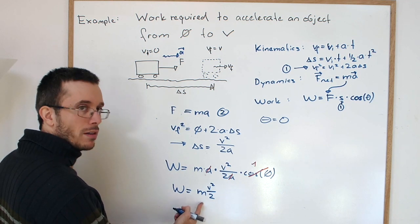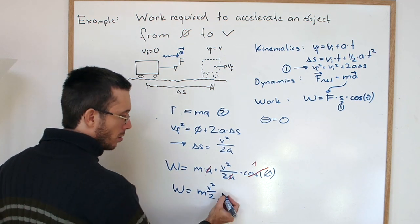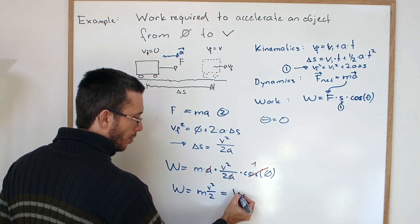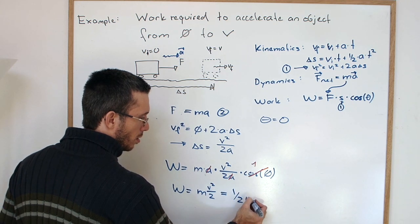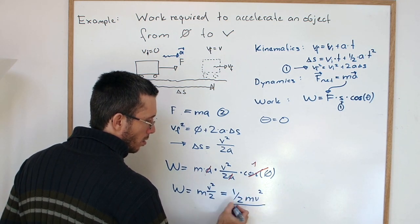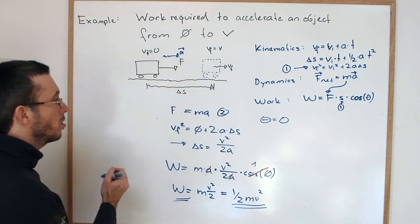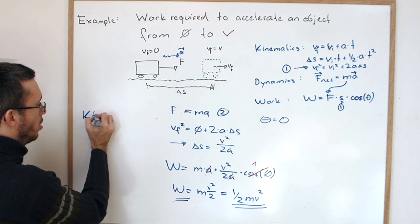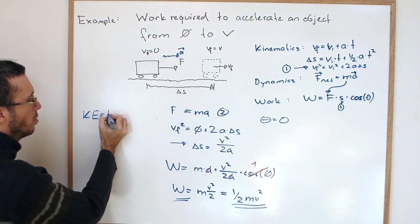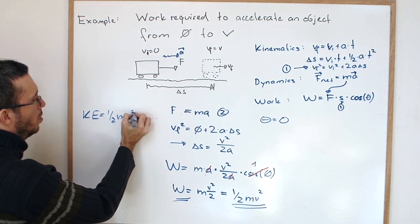Now maybe that doesn't look familiar yet. But what if I rewrite it like this? Have you seen this before? Yes, of course you have. That's the formula for kinetic energy. The kinetic energy is 1/2 mv squared.